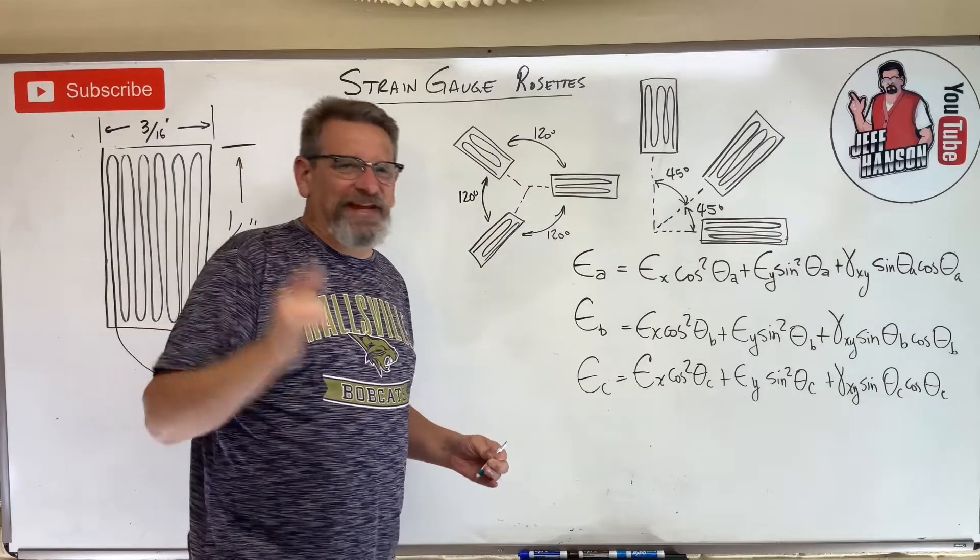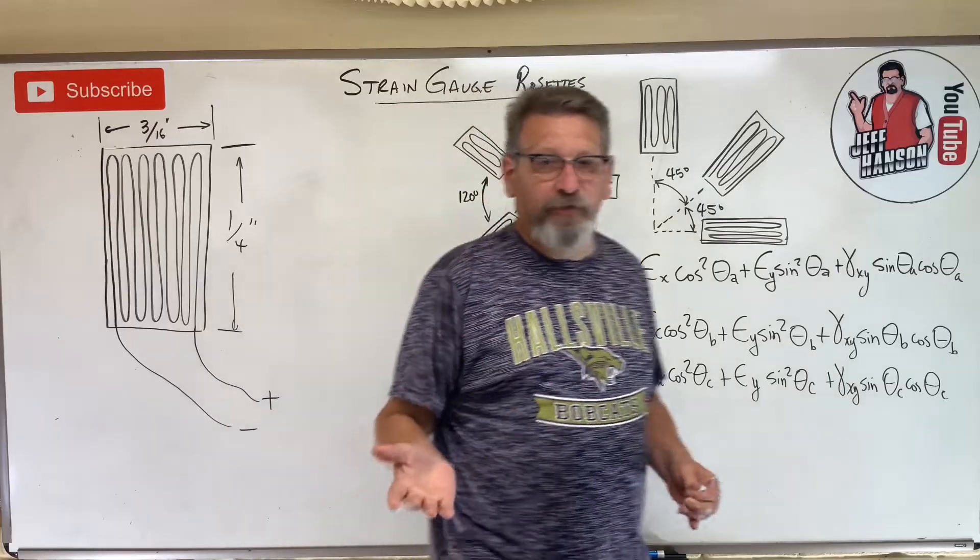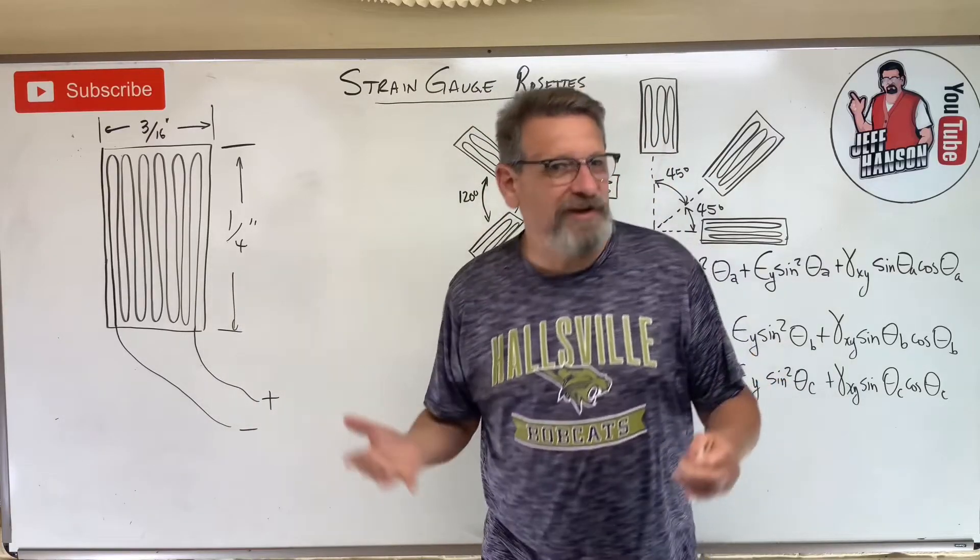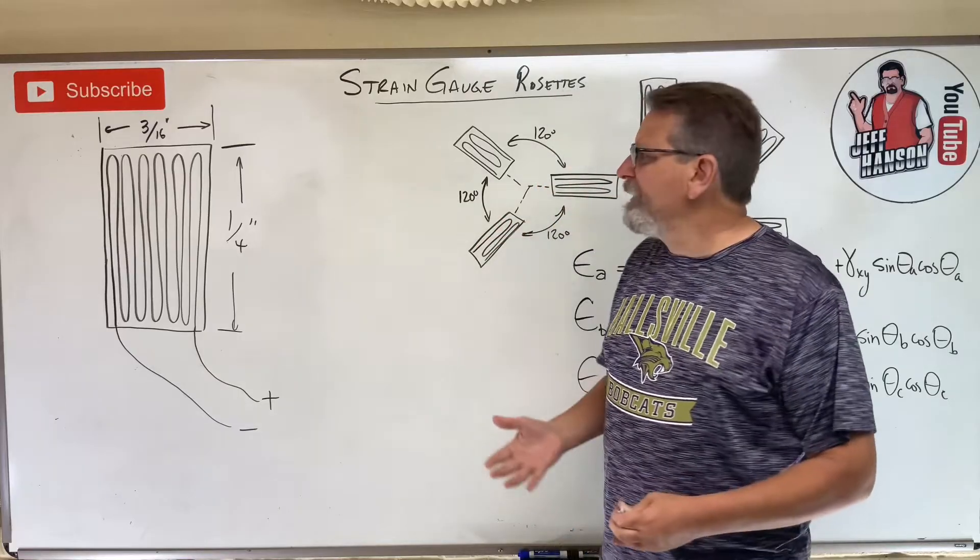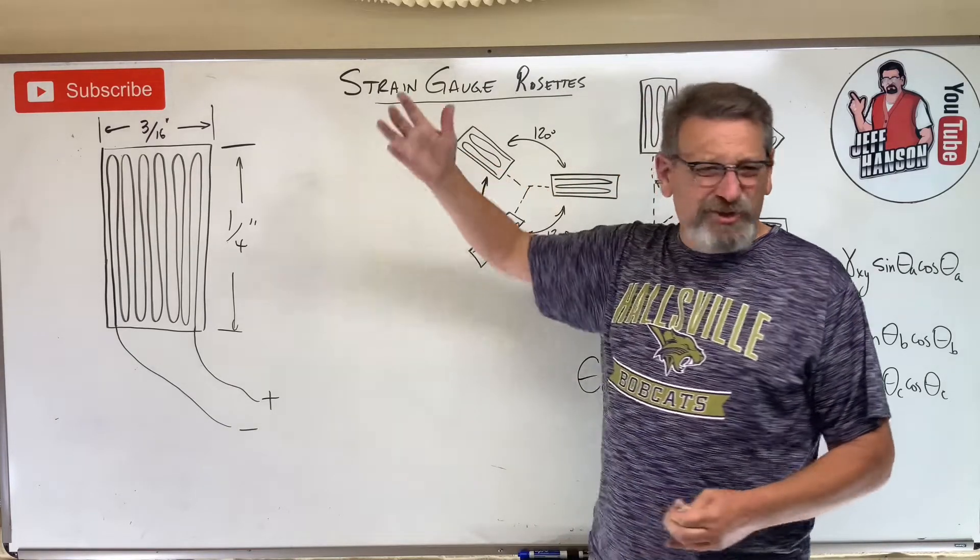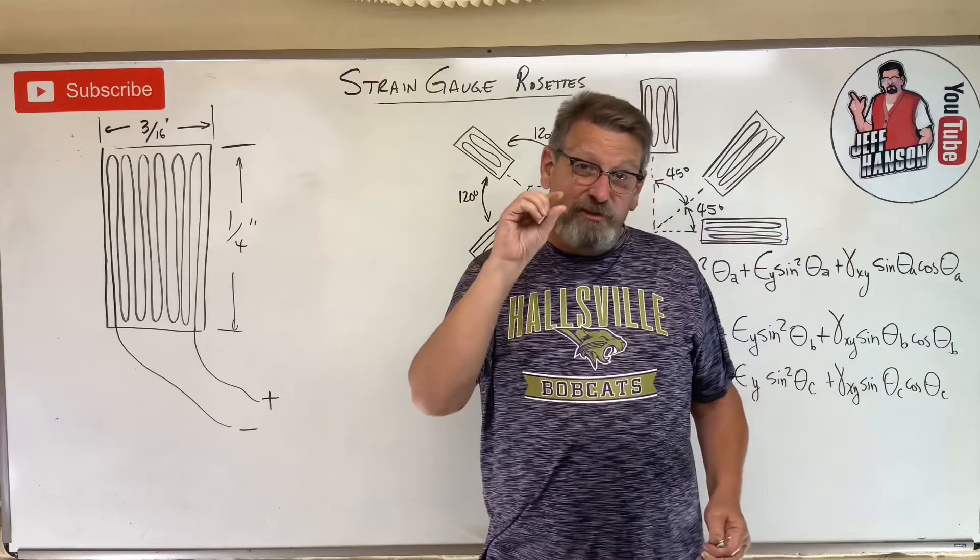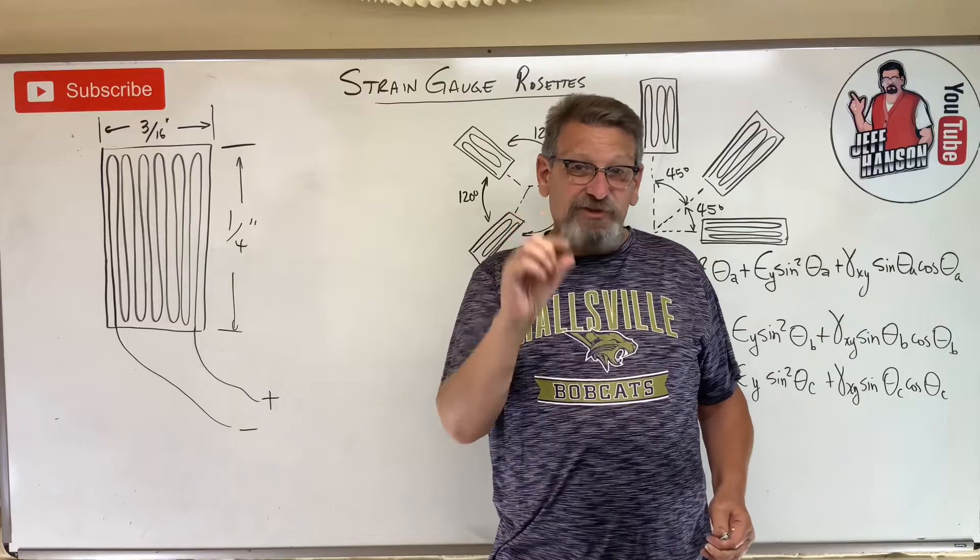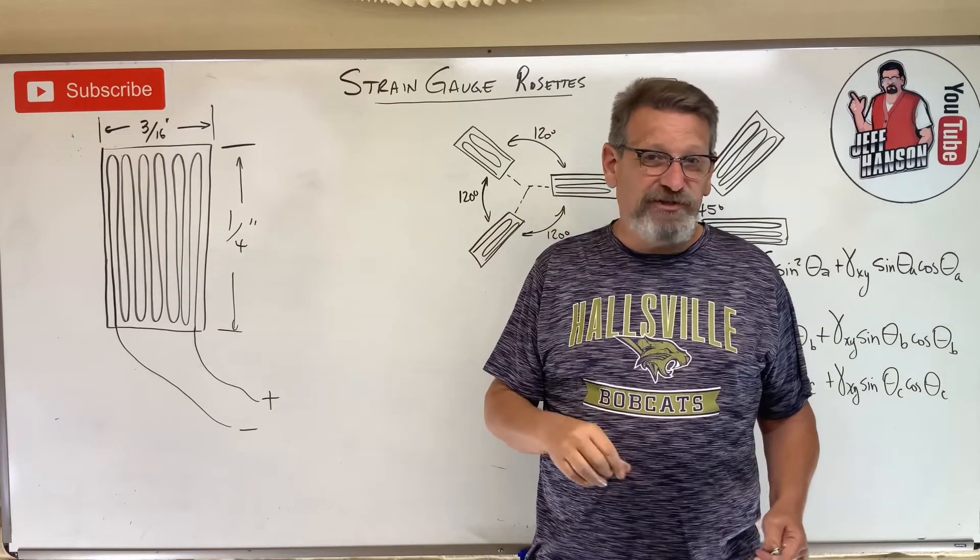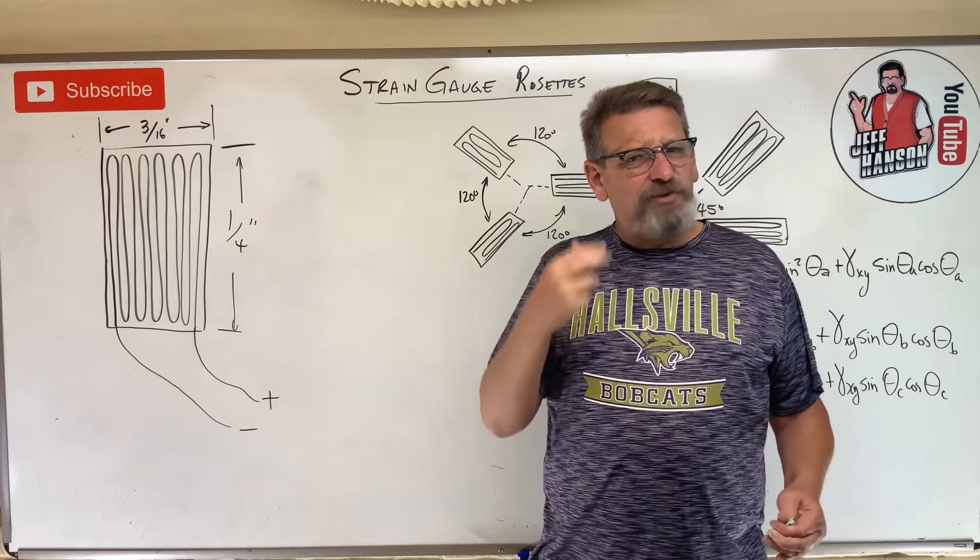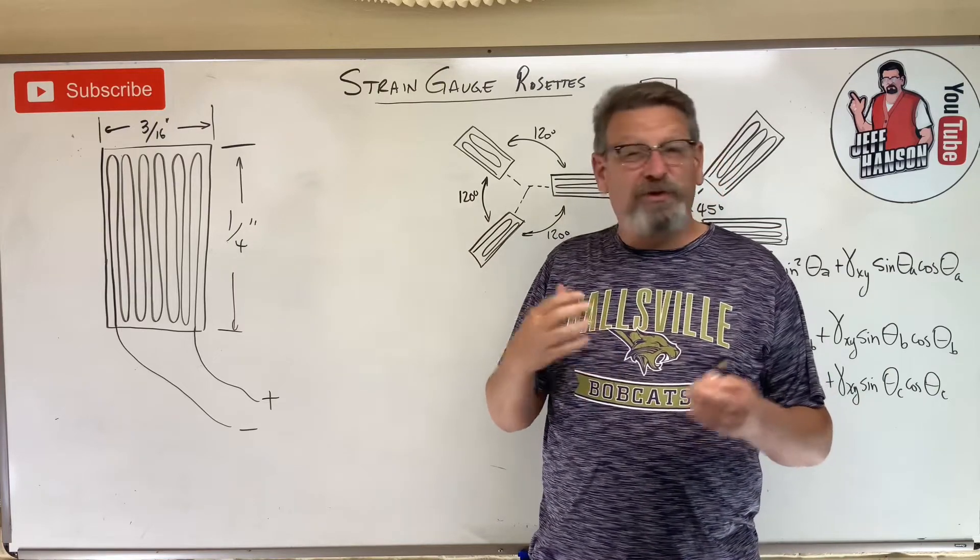Hey gang, coming at you with a video on strain gauges today. We've talked about strain before. What is strain? Strain is just deformation, it's just a change in length. So how do you measure strain anyway? Well, turns out strain is measured with a little gauge. It takes a physical reading of how much something has stretched and gives you feedback on that, probably in what we call micro strains.